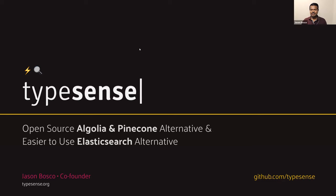Thanks. Hey everyone, nice to meet you all. I want to talk to you about Typesense today. If you've heard of Algolia, Pinecone, or Elasticsearch, Typesense is essentially an open source alternative to each of these. You can self-host it for free, and we also have a cloud version where we run the infrastructure for you. I'm going to talk about why Typesense, what use cases, how it came to be, and how we differentiate from other products in the market — specifically for site and app search.